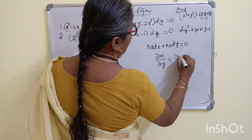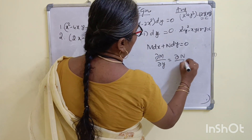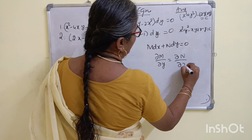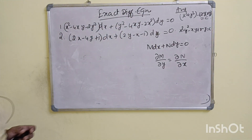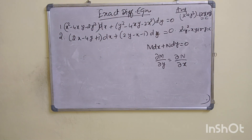The condition for exactness is: ∂M/∂y equal to ∂N/∂x.